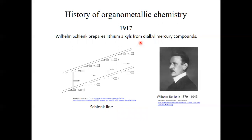Another important discovery was lithium alkyl compounds by Wilhelm Schlenk. He made lithium alkyls first from dialkyl mercury compounds. Lithium alkyls are also very important reagents in organic chemistry. You probably know that lithium alkyls are very air sensitive. Because of that, Wilhelm Schlenk designed the so-called Schlenk line. The Schlenk line allows you to work under an inert gas atmosphere and protect your chemicals from air.